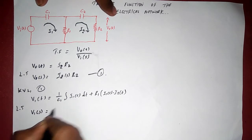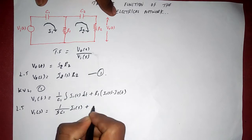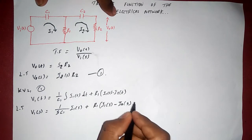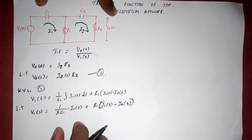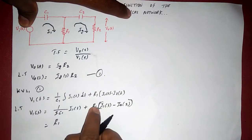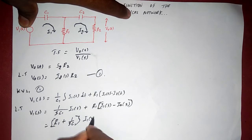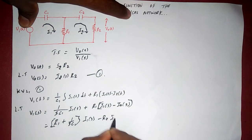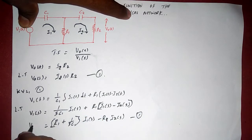Taking the Laplace transform: V1(s) = (1/sC1)·I1(s) + R1·(I1(s) − I2(s)). Simplifying and grouping terms: V1(s) = (R1 + 1/sC1)·I1(s) − R1·I2(s). This is the first mesh equation with I1(s) and I2(s) terms.